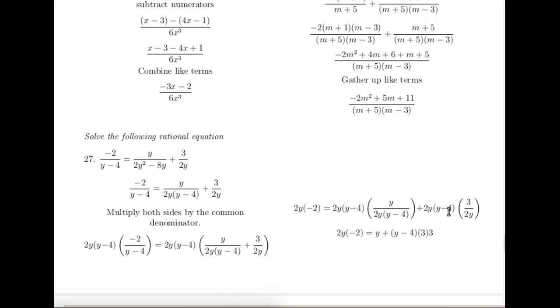This 2y will cancel that denominator leaving us this resolved. So there's the left hand side, this becomes just a y, and this part the 2y's cancel so we have the y minus 4 times 3. There's an extra 3 on here, let me clean that up.